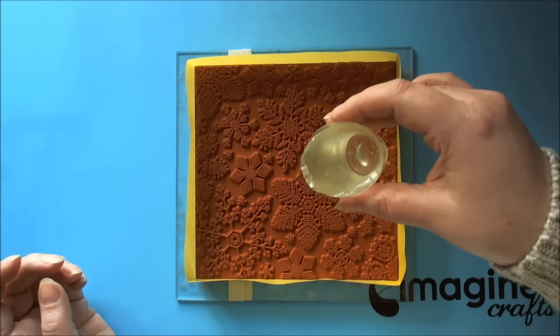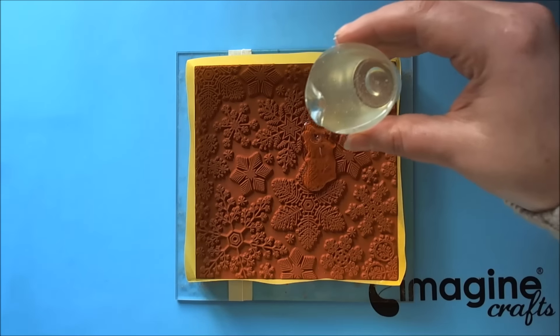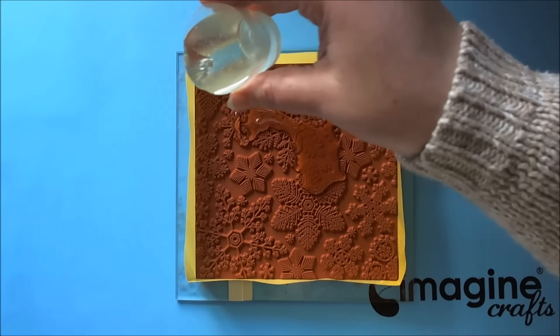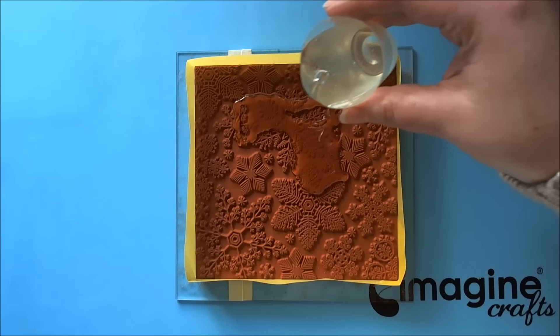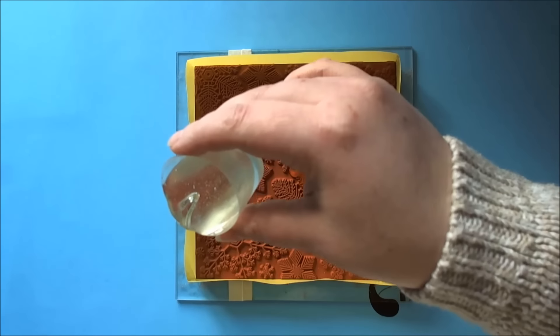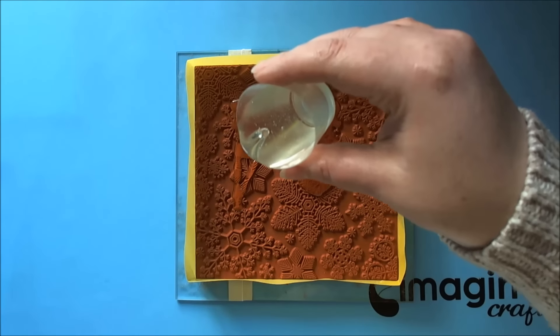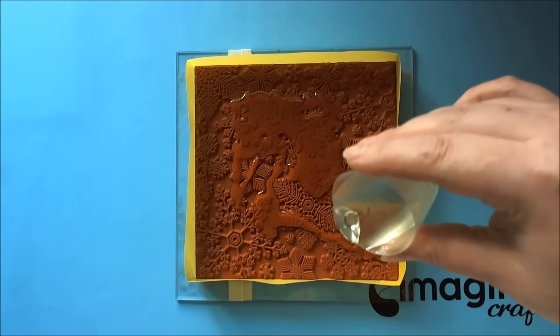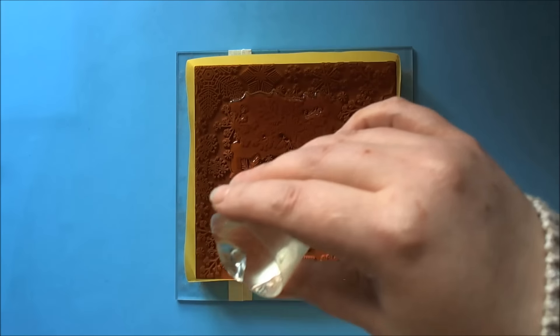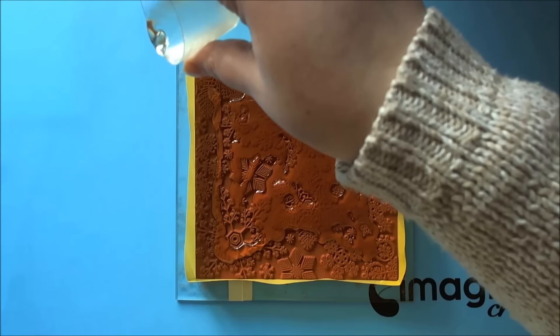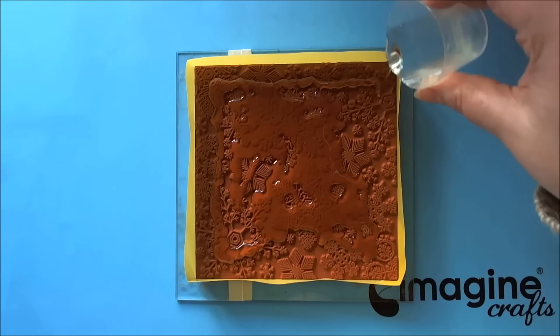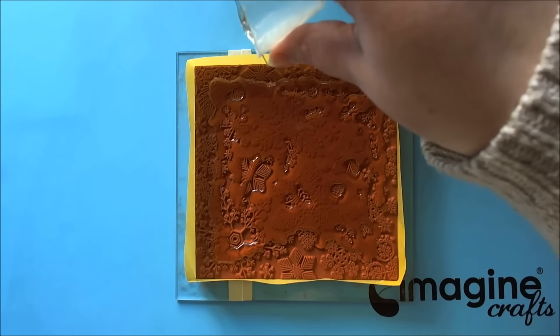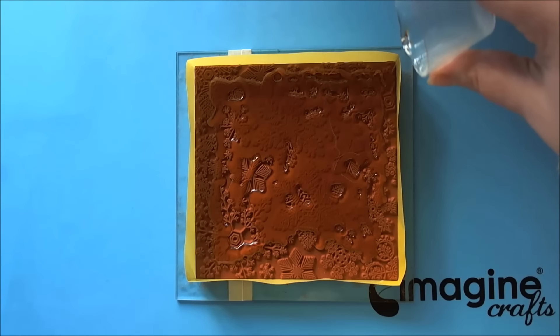Next I'm going to take my mixed resin and the bubbles are nicely rising to the surface because I've mixed such a large amount. It's really easy to whip bubbles into it by accident, so they will rise naturally. I'm going to try and pour it all over evenly. I will have to do this in two batches because of the large stamp. Ice resin will seamlessly join one layer to the next so it's not an issue if the whole stamp isn't covered the first time.